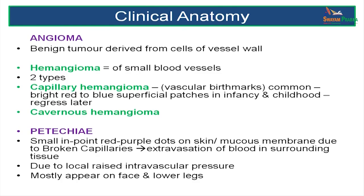An angioma is a benign tumour of a blood vessel. Hemangioma is of the smaller blood vessels and is of two types: capillary hemangioma, which are vascular birthmarks commonly seen in childhood that regress later on, or cavernous hemangioma. Another type of disorder is called petechiae, where you see small pinpoint red or purple dots on the skin or mucous membrane due to broken capillaries. Blood seeps out into the surrounding tissues and it could be due to raised local intravascular pressure, commonly seen over the face and the lower lids.